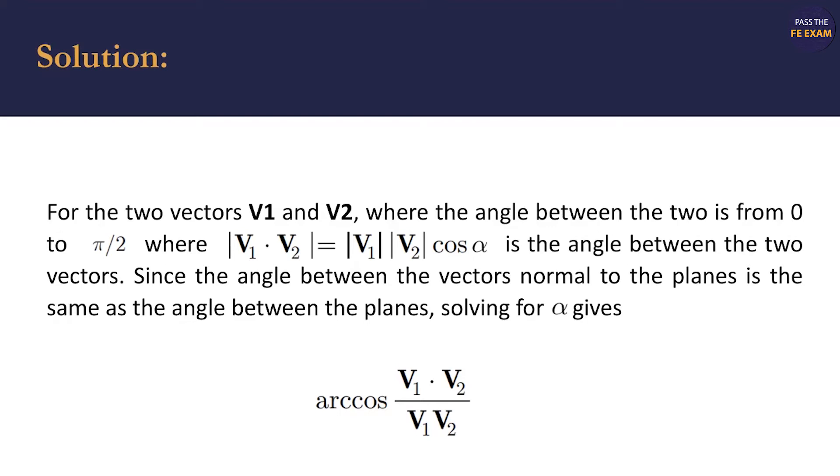Since the angle between the vectors normal to the planes is the same as the angle between the planes, solving for the angle gives you that is your answer, right? So I'm using theta, I guess they're using a different, they're using alpha, but it doesn't matter. That's the same angle that we're going after here, okay?